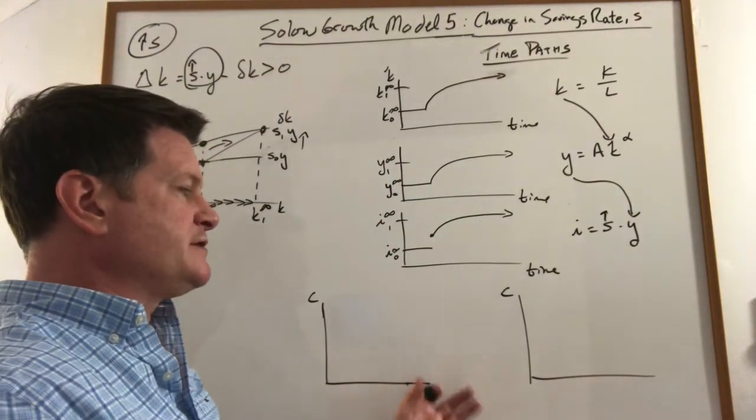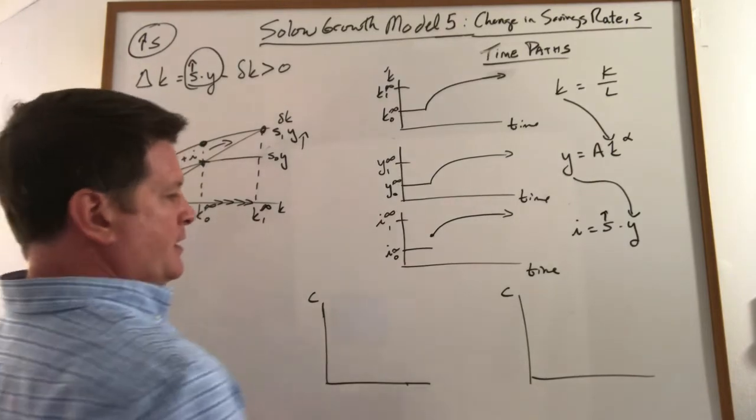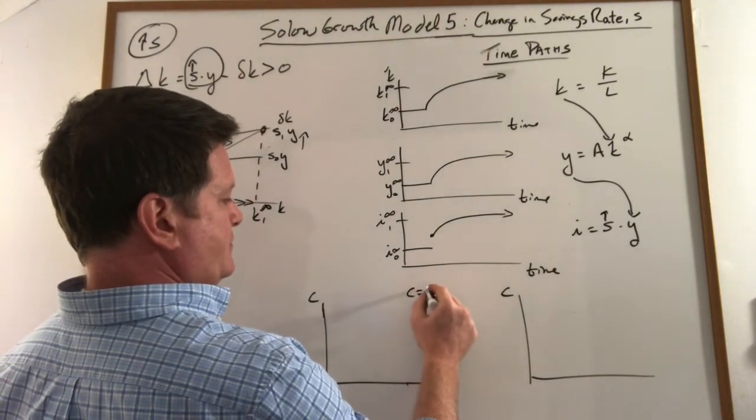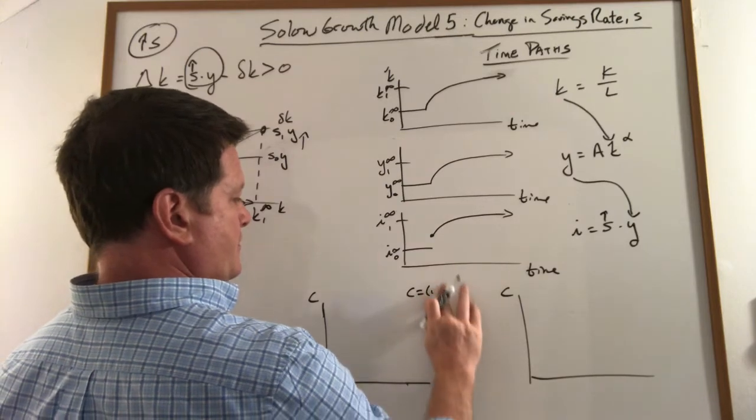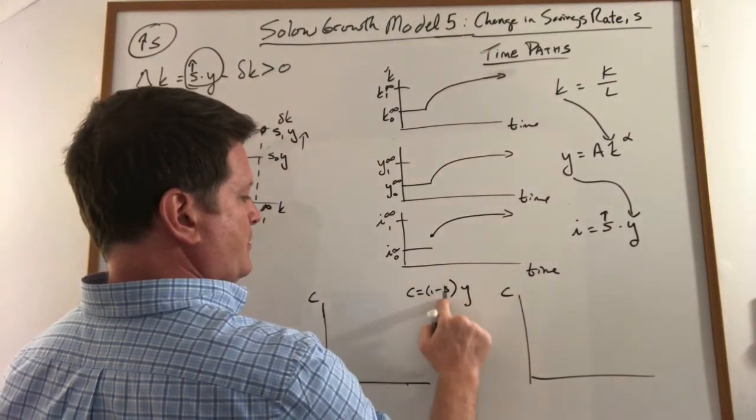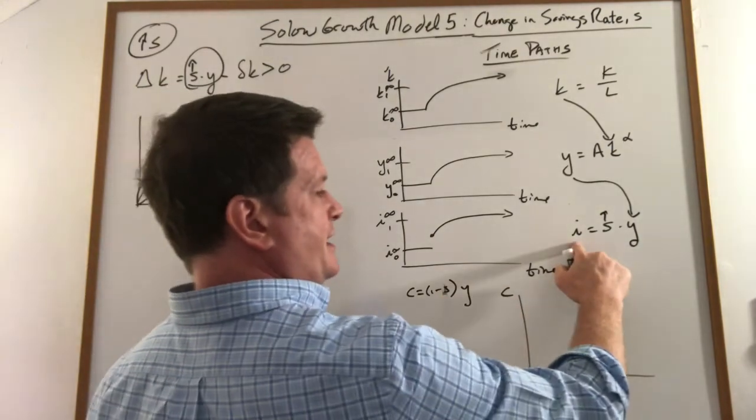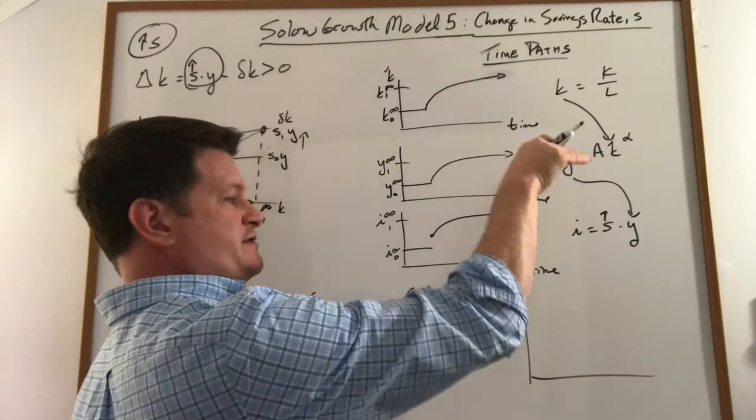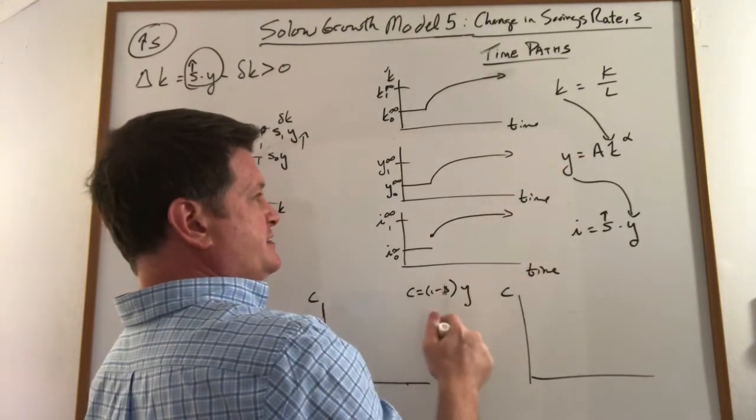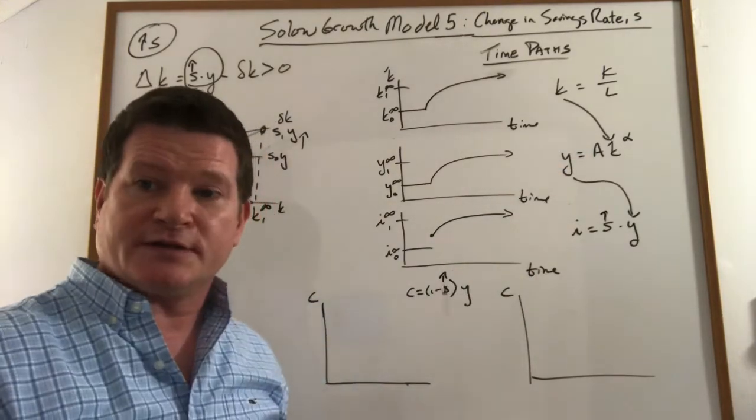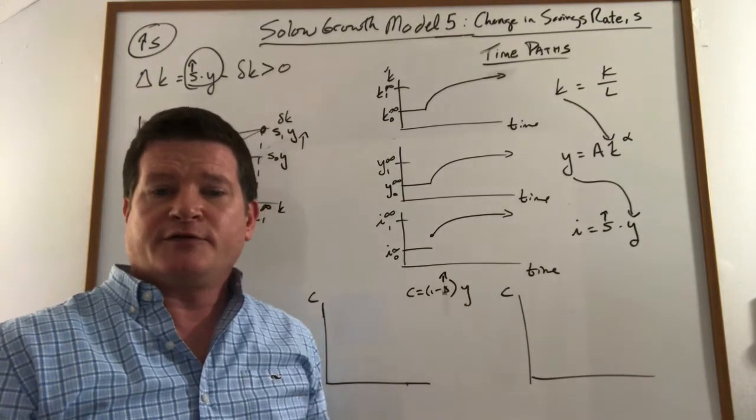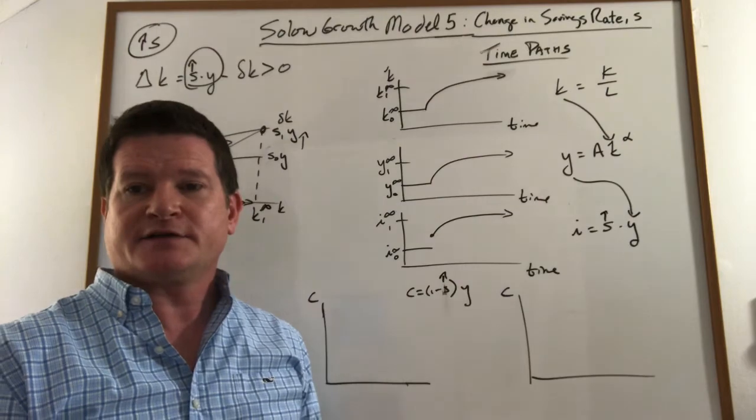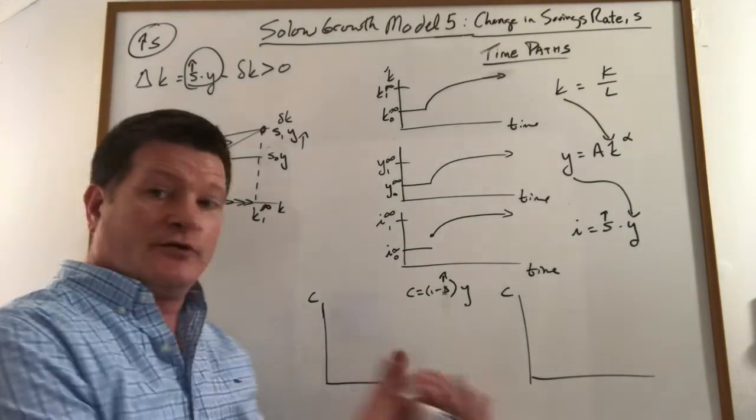The question is what happens to consumption. The trick with consumption is that in the case of investment, this went up and then this increased, so we know investment grows. In the case of consumption, when savings rate suddenly increases, consumption goes down. If you suddenly want to save more, you have to consume less out of the same income. So you give me $100, if I consume $90 and save $10, that's fine.